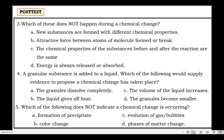Number 3: Which of these does not happen during a chemical change? A. New substances are formed with different chemical properties. B. Attractive force between atoms of molecules formed or break. C. Chemical properties of substances before and after the reaction are the same. D. Energy is always released or absorbed. Number 4: A granular substance is added to a liquid. Which of the following would supply evidence to propose a chemical change has taken place? A. The granules dissolve completely. B. The liquid gives off heat. C. The volume of liquid increases. D. The granules become smaller.